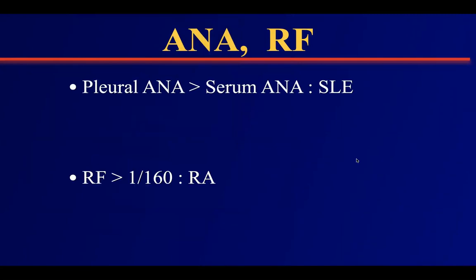Regarding antinuclear antibody and rheumatoid factor: normally we have antinuclear antibody to single-stranded DNA because approximately 8 trillion cells die every day in our organism. If pleural antinuclear antibody is higher than serum antinuclear antibody, we should suspect systemic lupus erythematosus. If the rheumatoid factor is higher than 1:160, rheumatoid arthritis should be suspected. Of course, we don't send the portion to the rheumatology laboratory in a patient without any rheumatological problem.